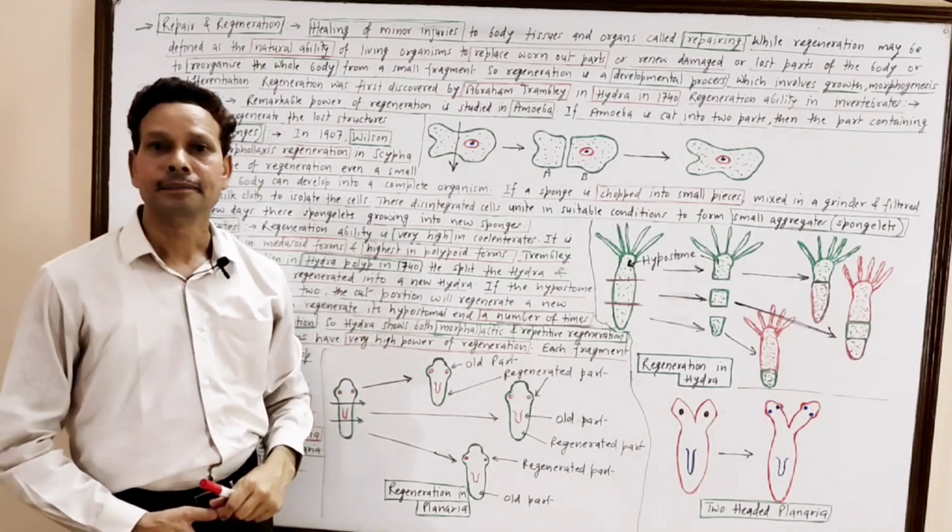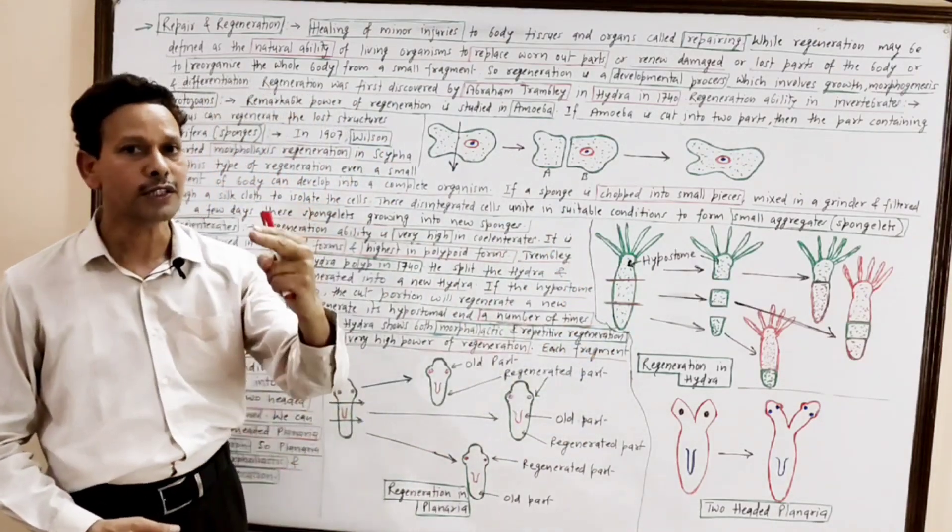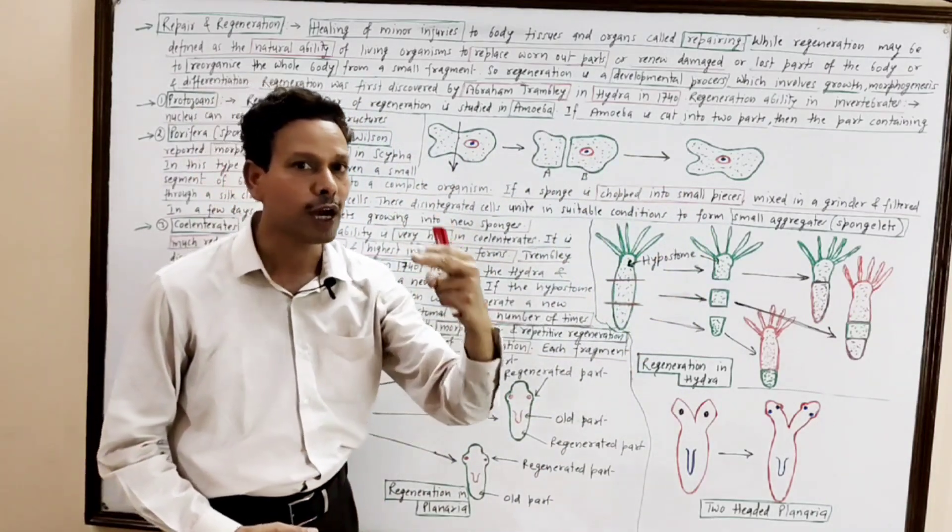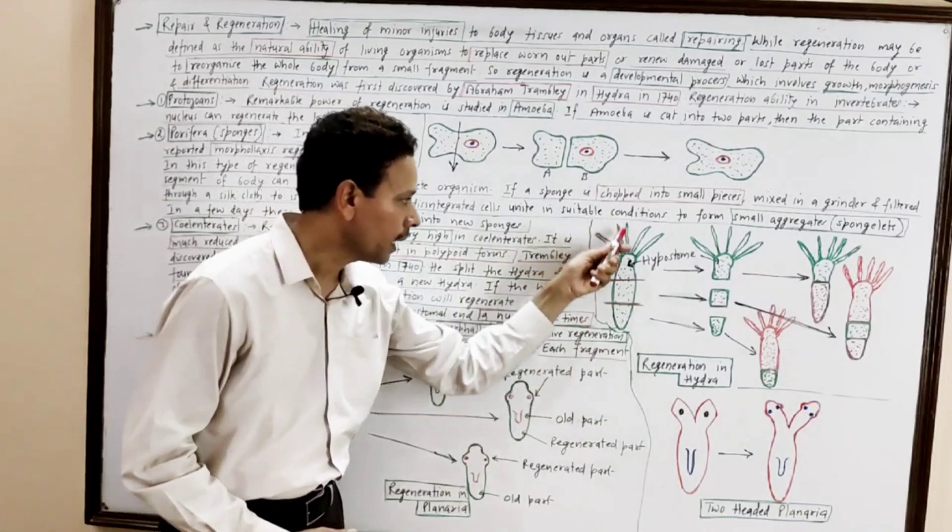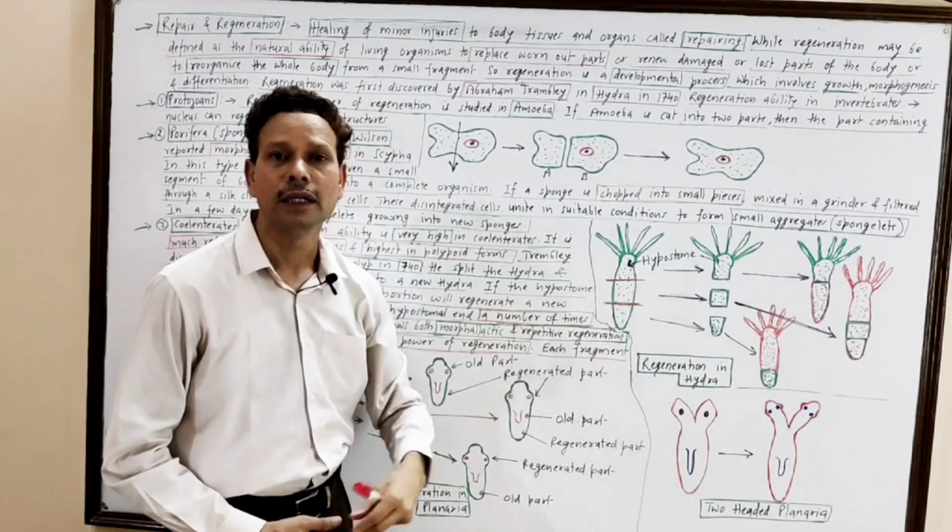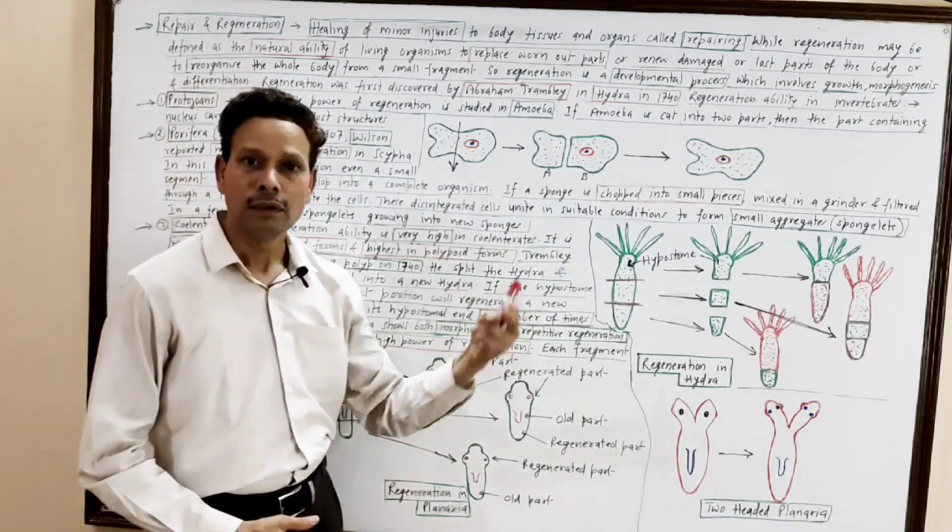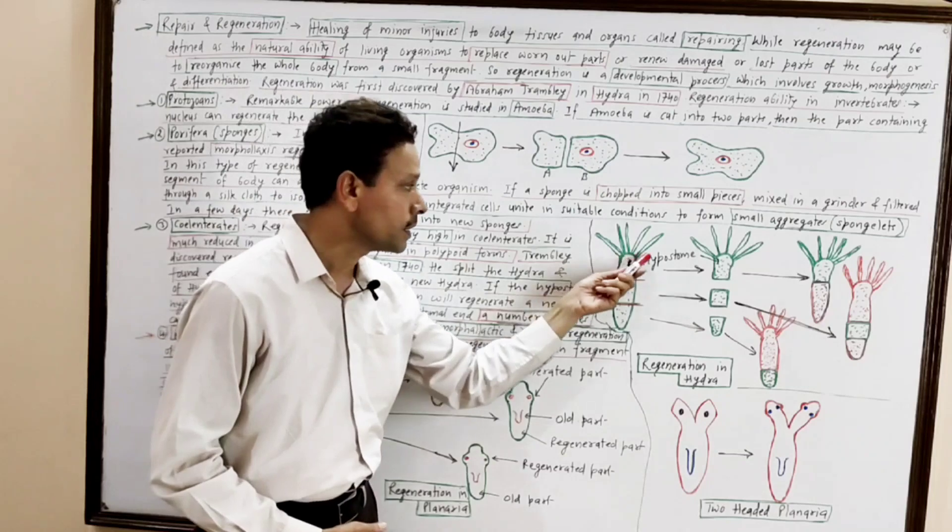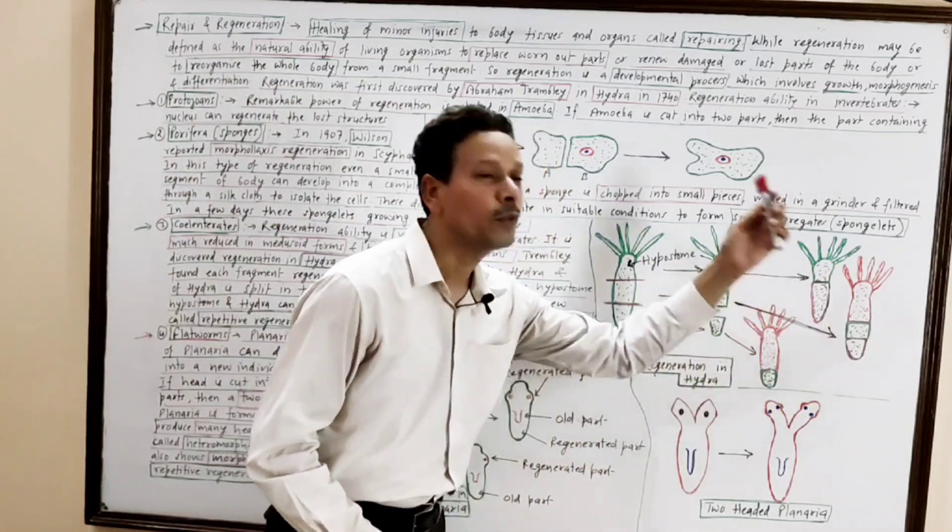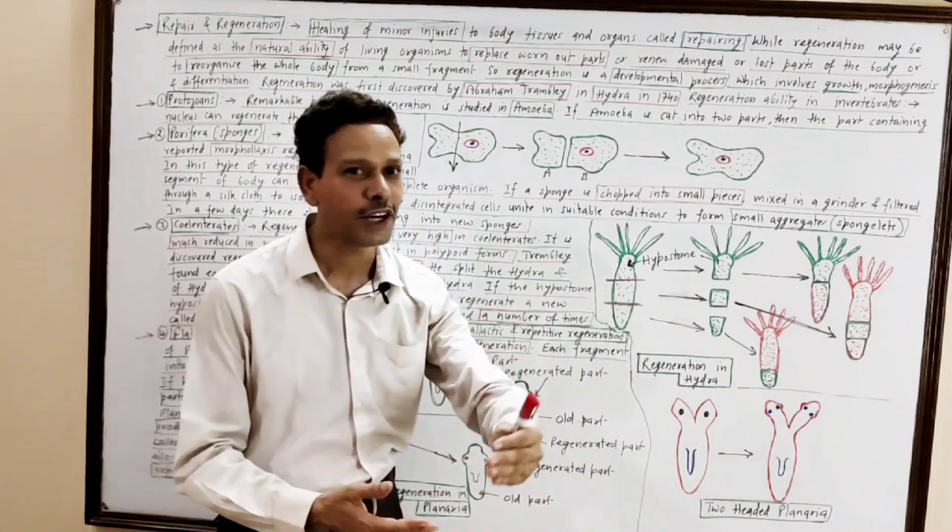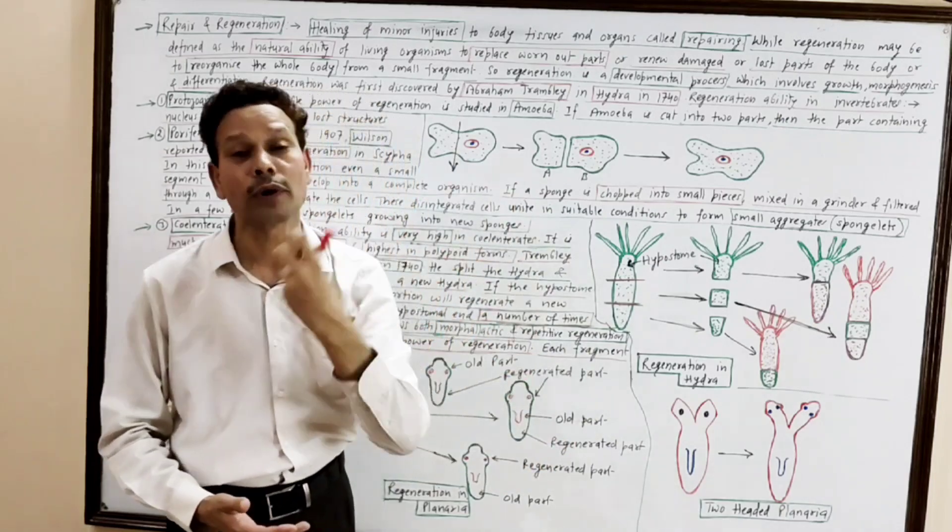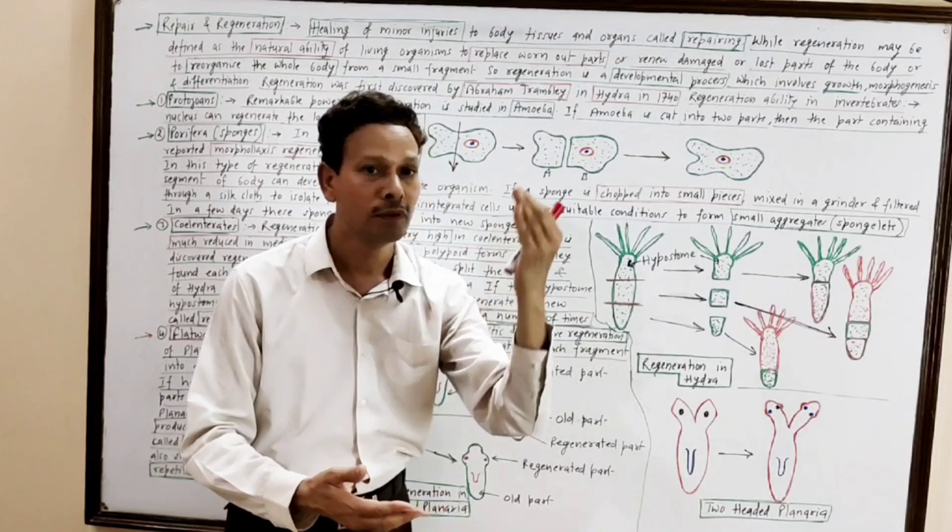Abraham Tremblay, he worked on hydra. First time he studied and he discovered, he performed experiments on hydra to study the regeneration. This hydra having three parts, this upper part, hypostome, having tentacles, this middle part and this lower part. If this hydra is cut into three parts, Abraham Tremblay observed that all three parts, this upper part, this middle part and lower part, each part is capable to give rise new hydra. That kind of regeneration is morpholactic. Morpholaxis means entire body gets organized from small fragments of an organism.